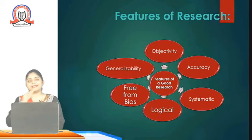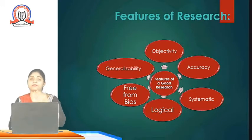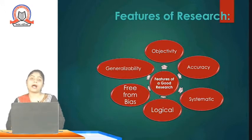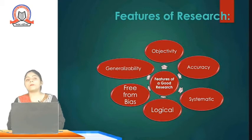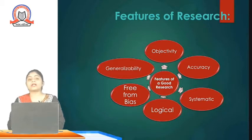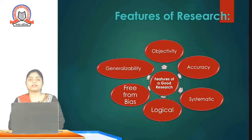Third, research must be systematic — step by step we need to proceed in the research work. Not first making a questionnaire, then deciding the sample — it needs to be done systematically. Next is logical — there should be a logic behind selecting a topic and a reason behind the selection. Then it should be free from bias — we should not introduce bias. The facts, truth, and figures need to be mentioned in the research work. Next is generalizability — certain things need to be generalized, applicable and functional to all people in different scenarios. These are the features or characteristics of research.